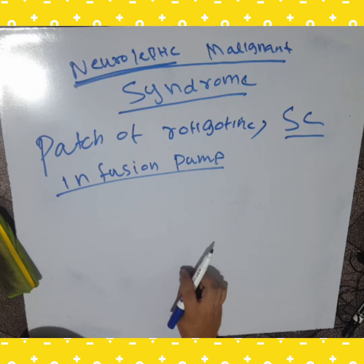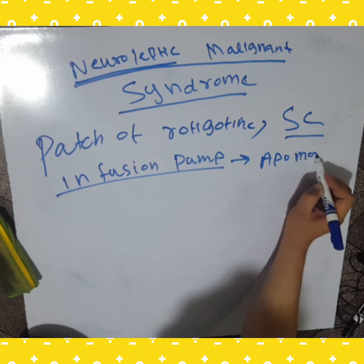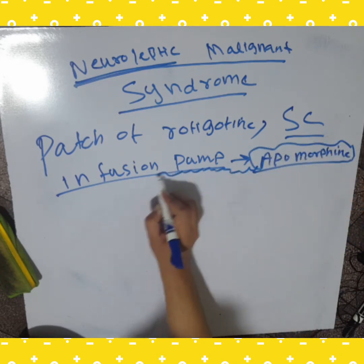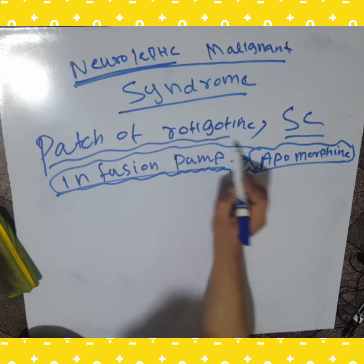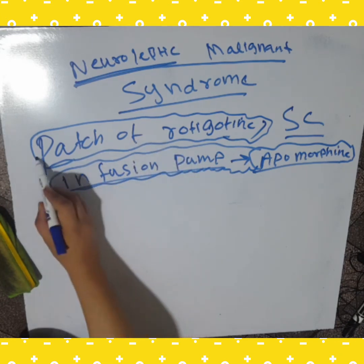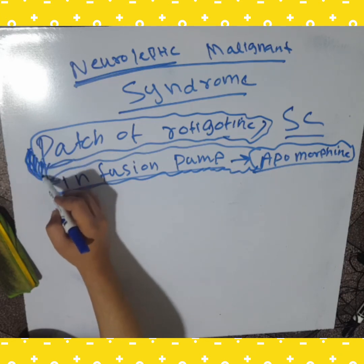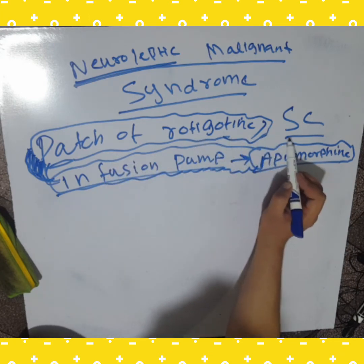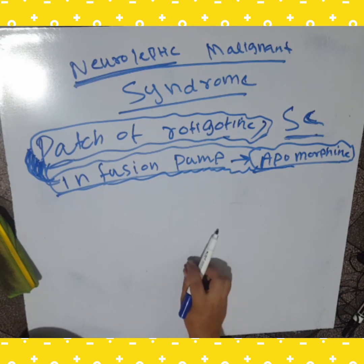The infusion pump includes apomorphine for the rapid management of the Neuroleptic Malignant Syndrome, or a patch of rotigotine. We can also give rotigotine subcutaneously or as an infusion pump of apomorphine — these two are for the rapid management in severe or dangerous cases.